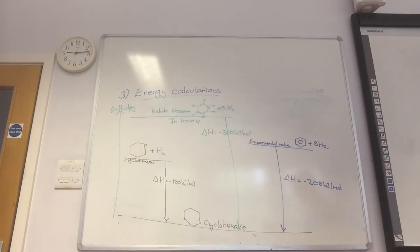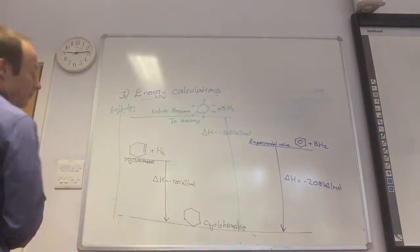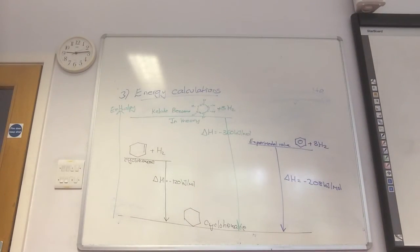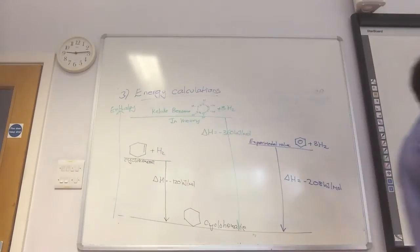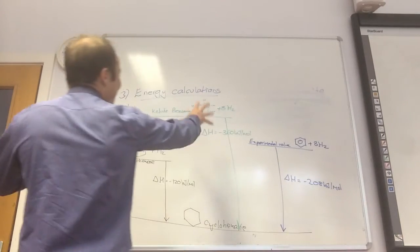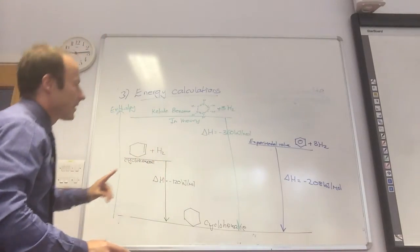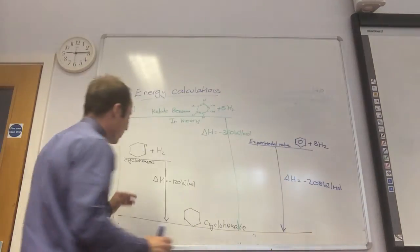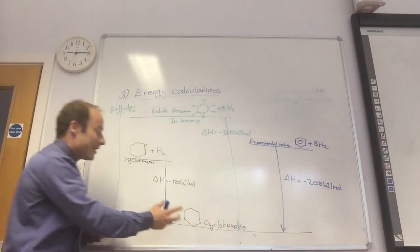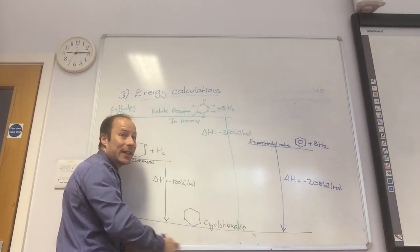So all those three bits of evidence suggest Kekule got it a little bit wrong. Has anyone else come up with anything better? Yes, they have. And we'll talk about that next time. So we do know what the structure is, but at the moment, all we know is that this isn't the correct structure that we've actually got. Now on your summary sheet, oh well, let's just sort of talk about this.